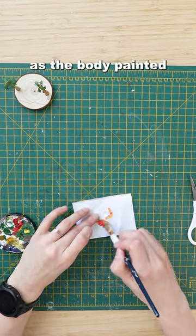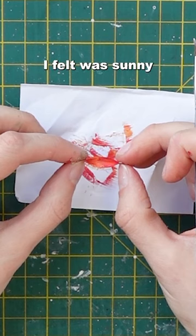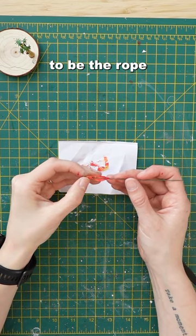Next was the hammock. I chose paper as the body, painted it a color I felt was sunny and then added wire through it to be the rope.